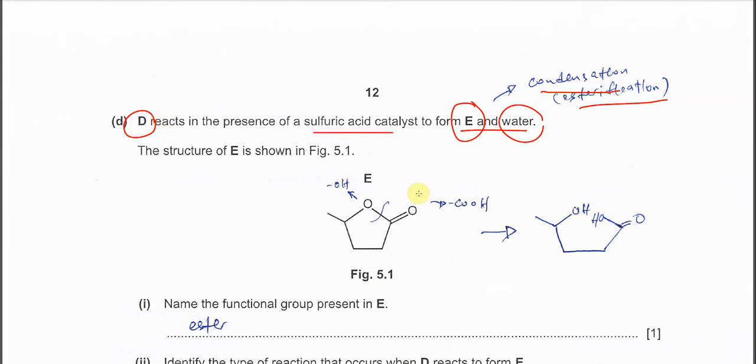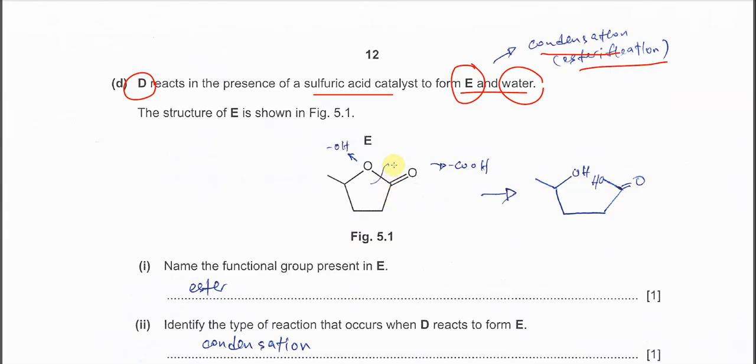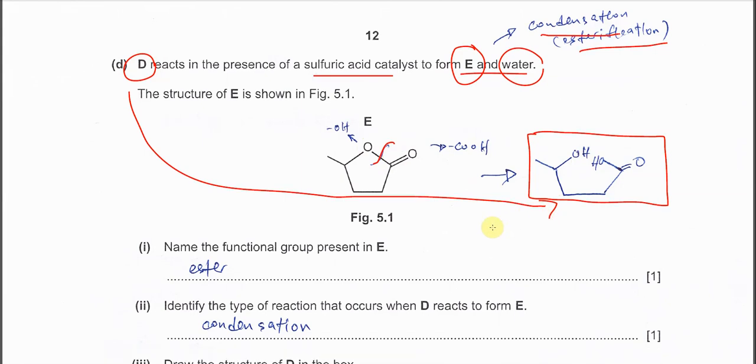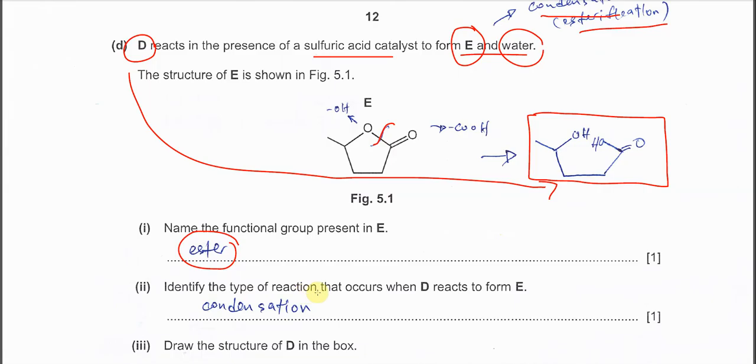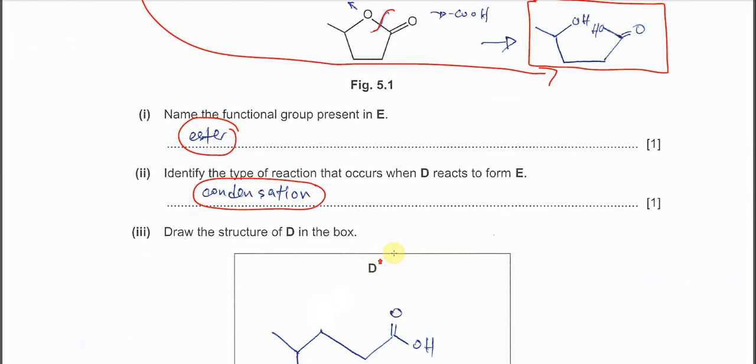Okay, so in order to deduce what is D, we can just do a very simple step. Okay, break this bond and you try to add H on this oxygen from OH which is alcohol. And this carbon you add another OH to form carboxylic acid which will look like this. Okay, so this one is D which forms E. Okay, name the functional group present in E, which is this one. E is ester group. Identify the type of reaction that occurs when D reacts to form E. Of course it's condensation. I told you already. So it self-reacts.